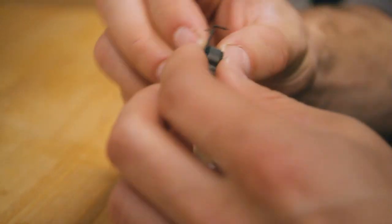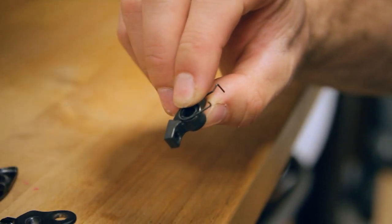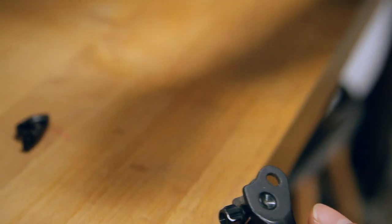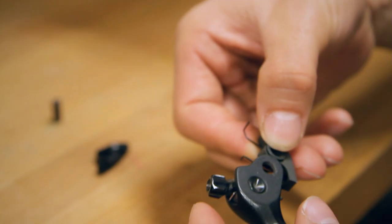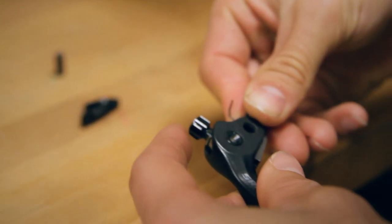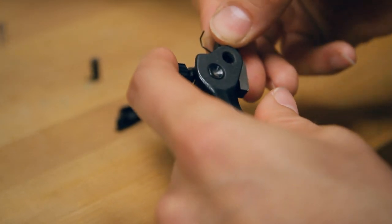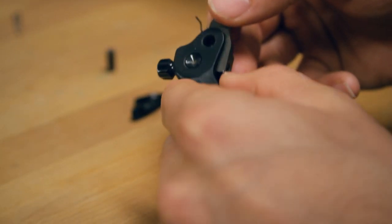Then, so like I was saying, this is the part where you want to keep track of where the spring went. So hold the spring on there. This is the orientation it goes in. Slide it into place so that the hole lines up.